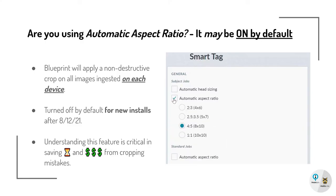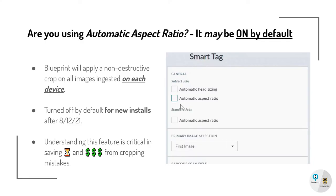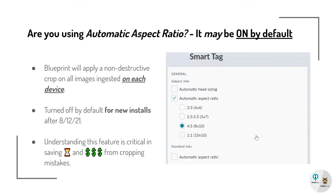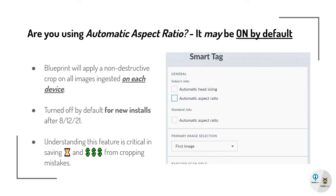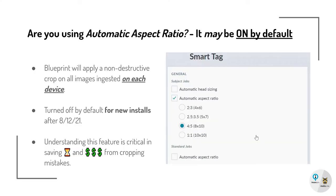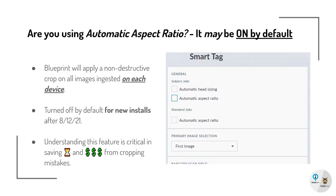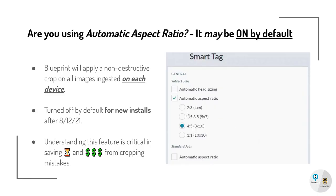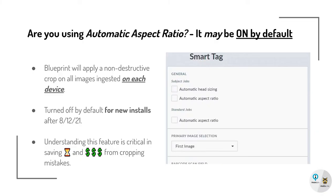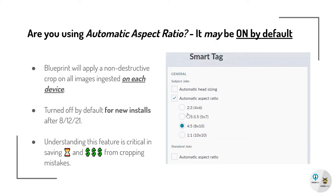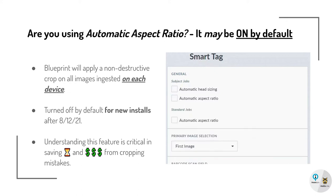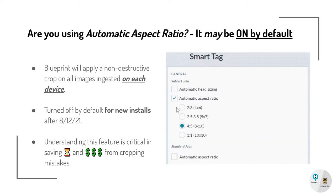Don't get me wrong, this is a handy feature, but if you're wanting your images to get added into the job as you've taken them in the moment, you'll want to make sure that you go into your device's smart tag settings and turn this feature off. Understanding this feature is critical in saving you time and money from any cropping mistakes that can occur throughout your workflow.